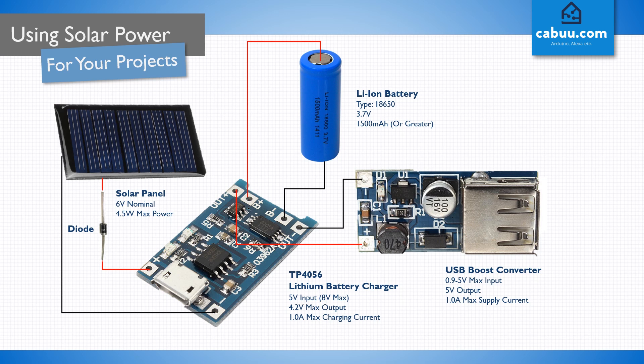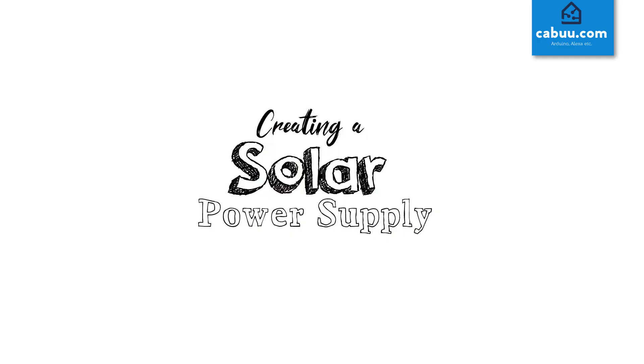Finally, connect the boost converter to the charge controller or battery. We should now have a stable 5 volts output which we can use to power a variety of devices. And that's it — you should now be able to generate a continuous and clean source of power for all of your projects. Thanks for watching.